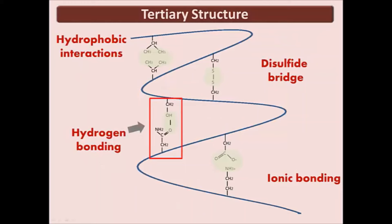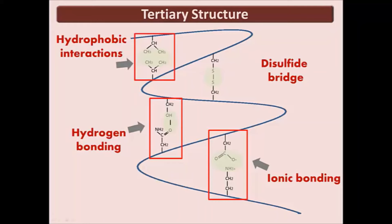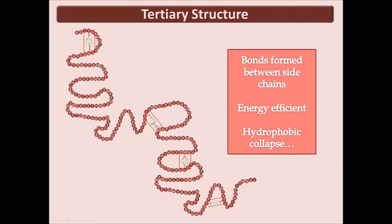Hydrogen bonds of tertiary structure occur between polar side chains. Ionic bonding occurs between positive and negative side chains, or basic and acidic side chains. Hydrophobic interaction is the interaction of nonpolar side chains as they cluster close together — the hydrophobic molecules are most often held together by van der Waals interactions. Disulfide bridges form between two cysteine monomers; the disulfide bridge is a covalent bond between the sulfhydryl groups in the side chains. It is the folding and bending of the backbone associated with these bonds in tertiary structure that stabilizes the three-dimensional shape of a protein. Proteins fold in the manner that costs the least amount of energy.